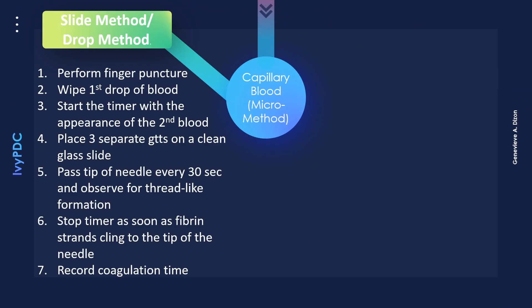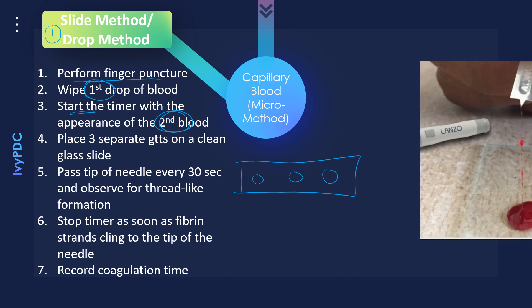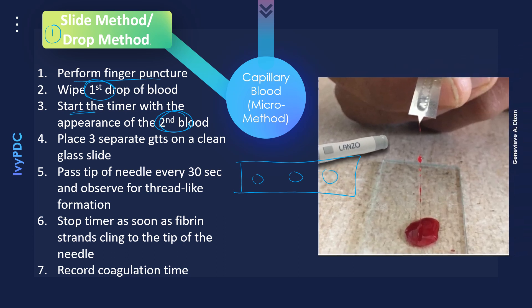The first method under the micro method is the slide or drop method. Perform a finger puncture and wipe the first drop of blood. Start the timer after the second drop of blood reappears. Place three drops of blood on a clean glass slide, then after 30 seconds observe for the formation of a thread-like structure using the tip of the lancet, checking every 30 seconds.